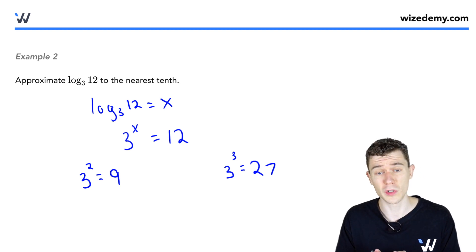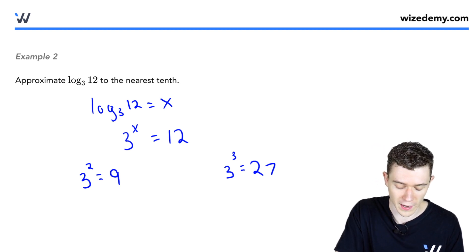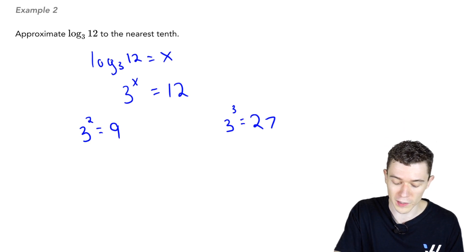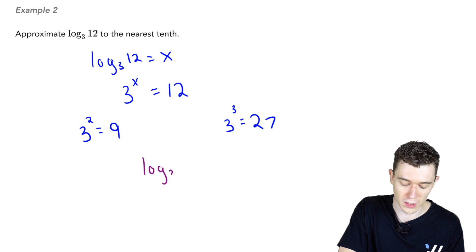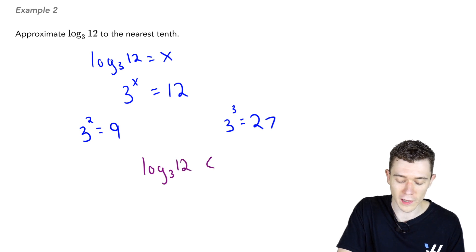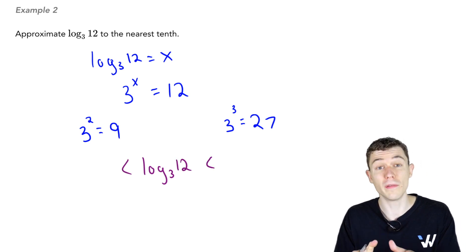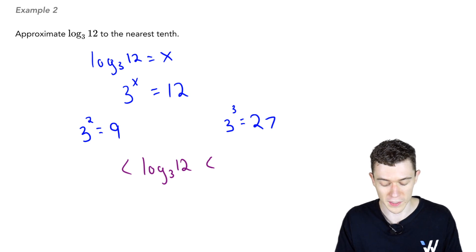12 lives in between here. So in other words, we're saying if we were to put these in logarithmic form, the thing that we care about, which is log base 3 of 12, this should live in between the equivalent logarithmic expressions for 3 squared equals 9 and 3 cubed equals 27.